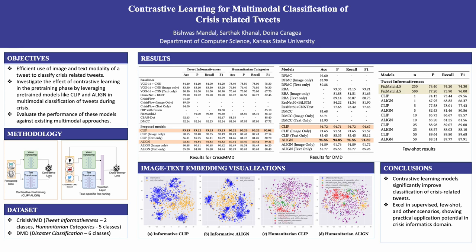We instead explore self-supervised models that are trained to learn image and text representations jointly. Specifically, we leverage CLIP and ALIGN models which are pre-trained using contrastive learning techniques on vast amounts of data from the internet. CLIP has been trained using 400 million image-text pairs whereas ALIGN has been trained on 1.8 billion image-text pairs.